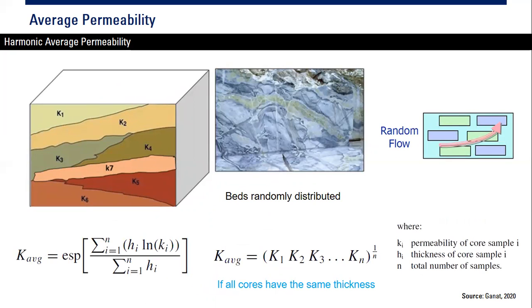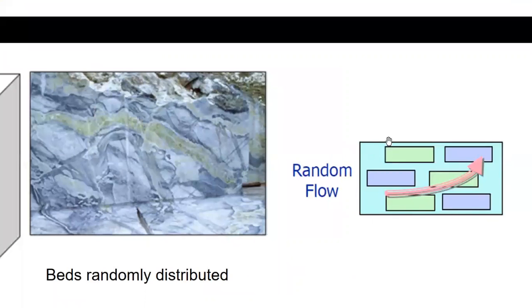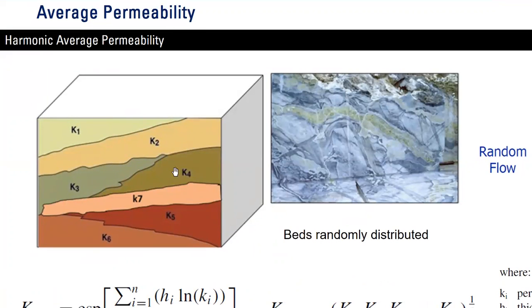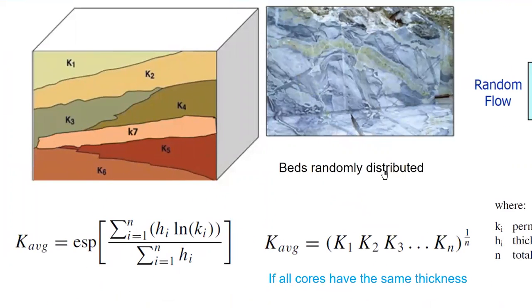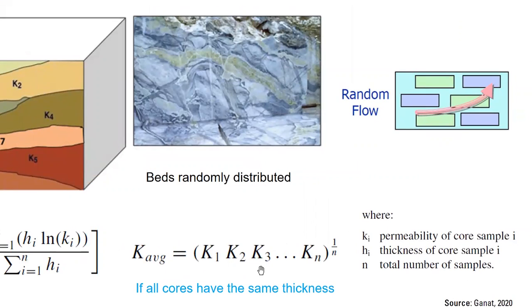For very heterogeneous reservoirs where beds are irregular in shape, we use geometric averaging. The beds are randomly distributed with different shape, area, thickness, and permeability. If all cores have the same thickness, the geometric average is simply (k1 · k2 · k3 · ... · kn) raised to the power of 1/n, where n is the total number of samples.